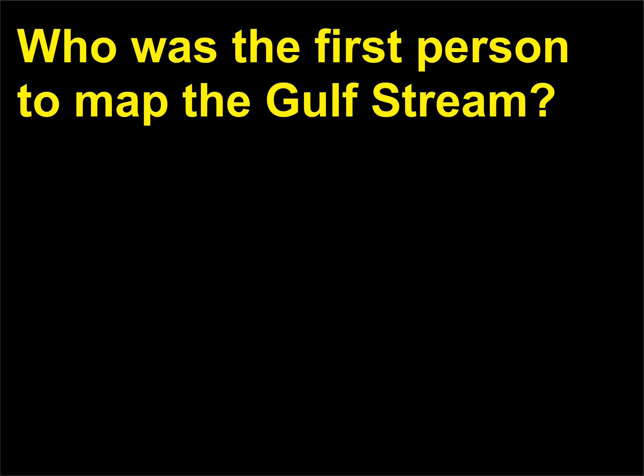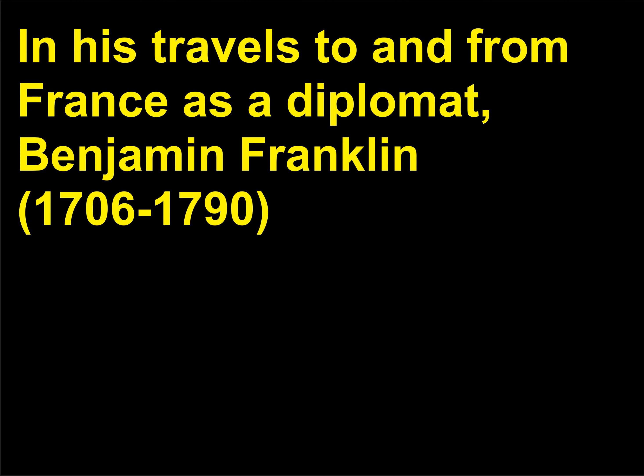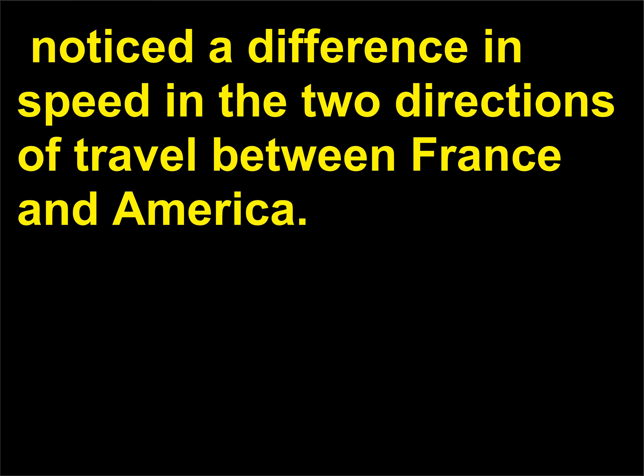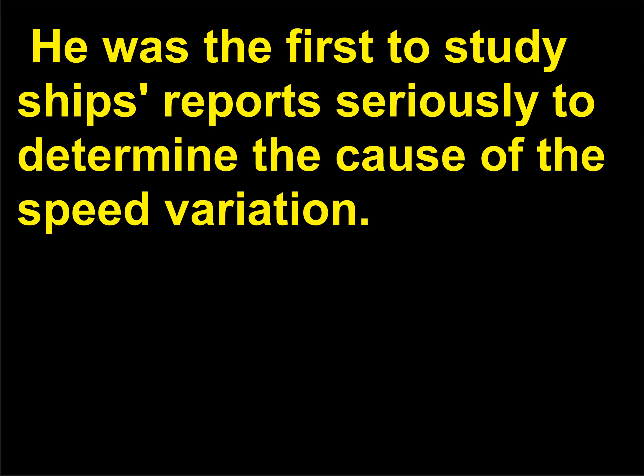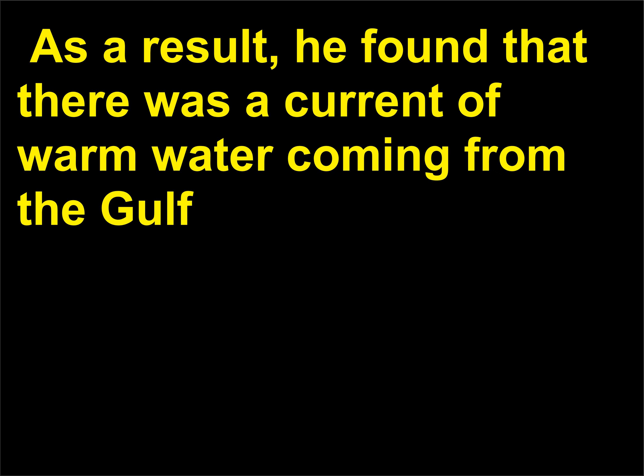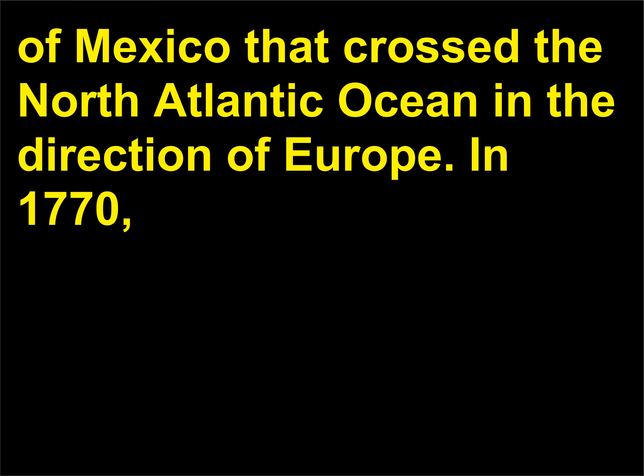Who was the first person to map the Gulf Stream? In his travels to and from France as a diplomat, Benjamin Franklin, 1706–1790, noticed a difference in speed in the two directions of travel between France and America. He was the first to study ships' reports seriously to determine the cause of the speed variation. As a result, he found that there was a current of warm water coming from the Gulf of Mexico that crossed the North Atlantic Ocean in the direction of Europe. In 1770, Franklin mapped it.